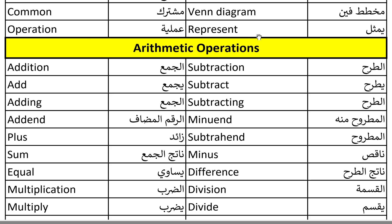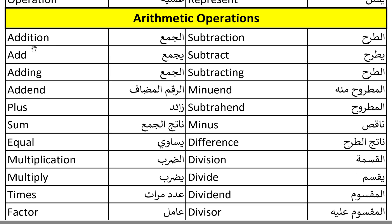And now let's go to arithmetic operations. Arithmetic operations include basic operations such as addition, subtraction, multiplication, and division. So let's start. Addition. Addition. Add. Adding. Add. Plus. Plus. Sum. Equal. Equal.